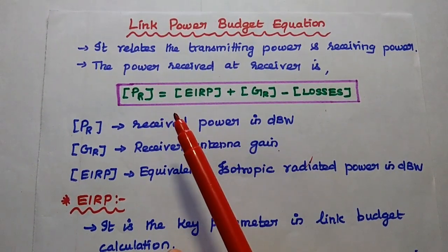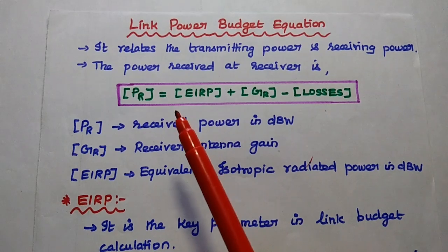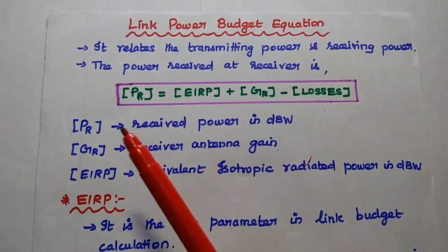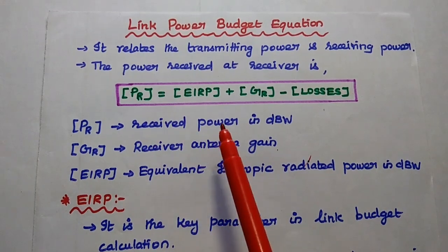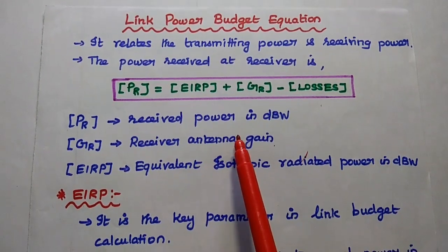The square bracket represents the values in terms of dB, decibel. Here PR is the received power in dB watts.